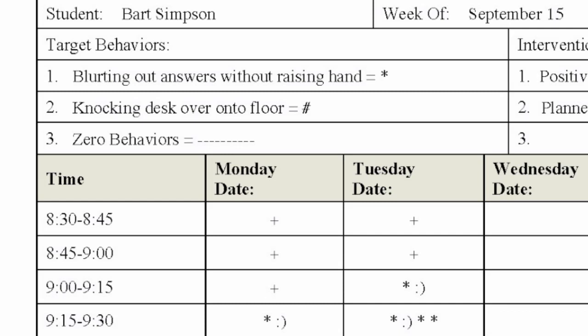More than one behavior and intervention can be tracked on the scatterplot. However, it is not advisable to try and reduce more than three problematic behaviors at a time. If you are working towards reducing many problematic behaviors, you may want to determine which two or three are the most significant concern to the safety of your student and others, or which two or three behaviors are considered the most disruptive to the education of the other students in the room.